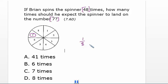Okay, so since the number seven represents one eighth of our spinner, when we spin the spinner 48 times, we can predict that this spinner will land on the number seven one eighth of those times. So we really have to figure out what is one eighth of forty-eight.